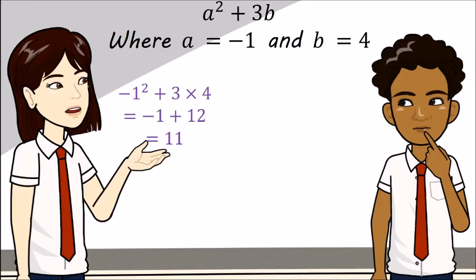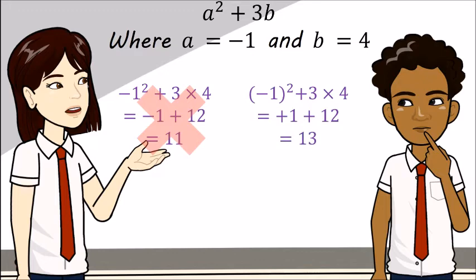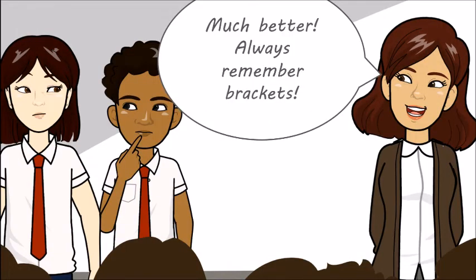Oh, you forgot the brackets. Let's do it again with brackets. Oh, minus 1 squared is plus 1. So now we have plus 1 plus 12. So the answer is actually 13. Much better. Always remember brackets.